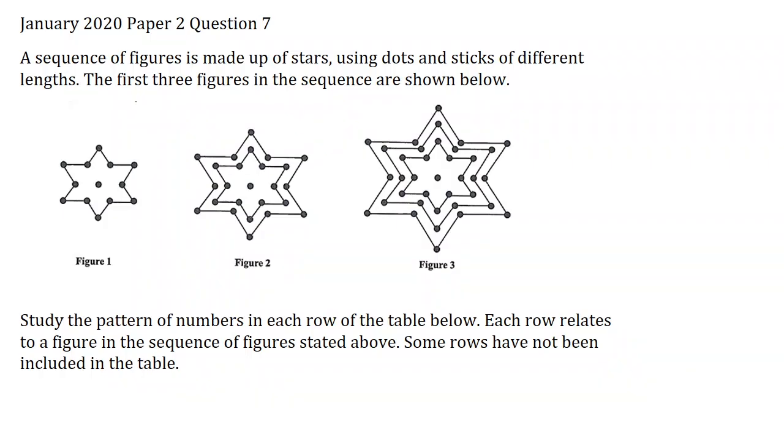In this video I'll be solving January 2020 Paper 2, Question 7. A sequence of figures is made up of stars using dots and sticks of different lengths. The first three figures in the sequence are shown below.